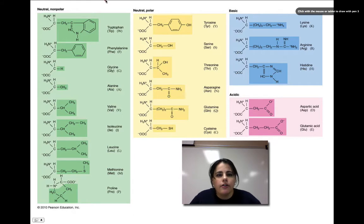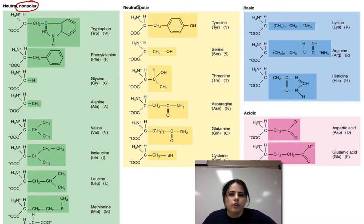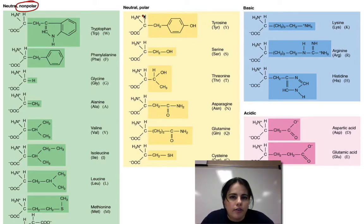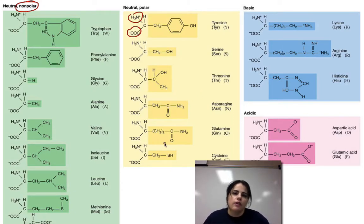Amino acids are categorized based on their chemical properties: non-polar, polar, those that form a base in solution, and those that form an acid in solution. But they all have the same general structure. Looking at tyrosine as an example — there's a carbon and hydrogen, an amino group, a carboxyl group, and a side group in the dark yellow box. The side groups are the only thing that change from amino acid to amino acid. This is what your genetic material dictates: the order of amino acids that make the polypeptide, which makes the proteins in your body.